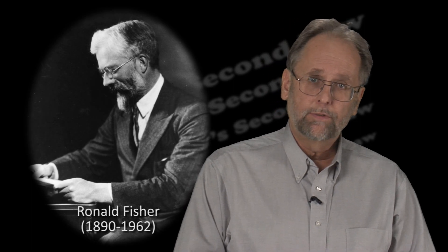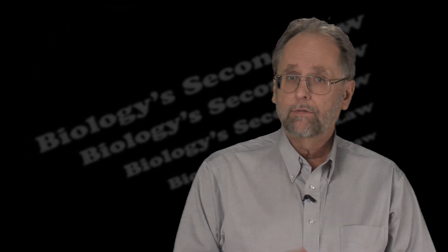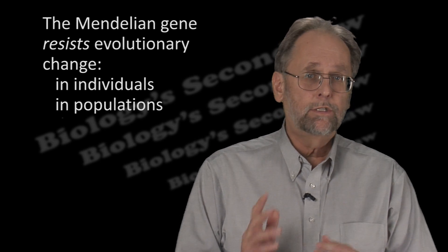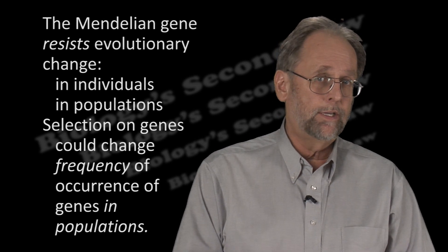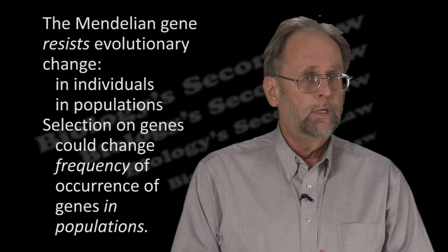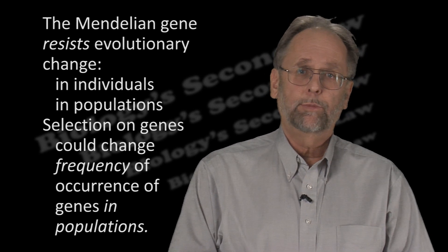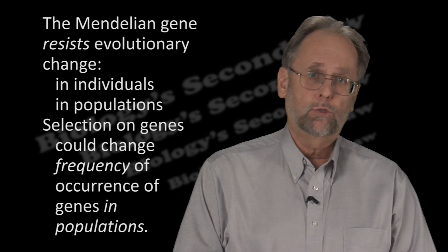In the 1920s though, the British geneticist Ronald Fisher worked out that selection against particular variants of a gene could change its frequency of occurrence in a population. In short, genetics at any level could be reconciled with Darwinian natural selection.